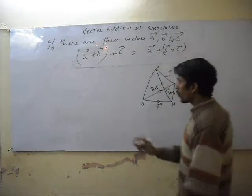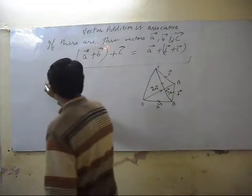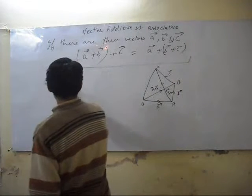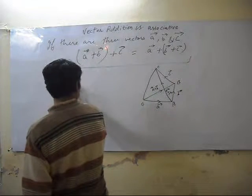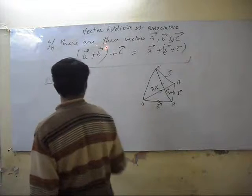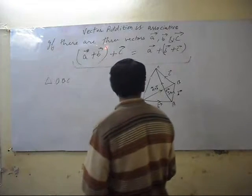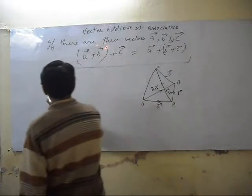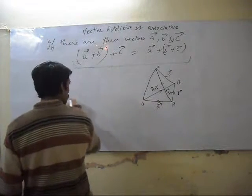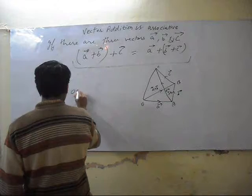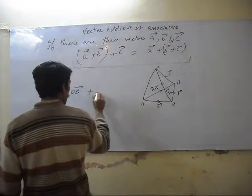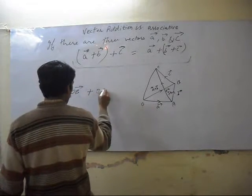Now in the triangle O, B, C: the OC vector is always equal to OB vector plus BC vector.